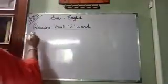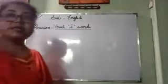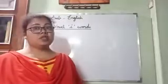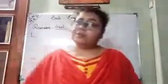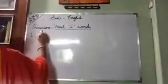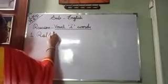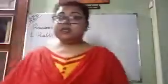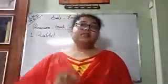What is the first word? Number 1. The first word is rabbit. We are going to revise the words which are given in the book, and apart from that, you can write whatever you know. So, the first word is rabbit. R-A-B-B-R-T. Rabbit. Rabbit means what? It is an animal, white in color, maybe in another color.